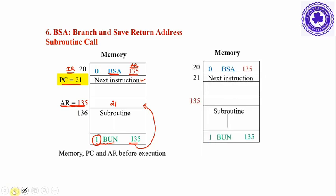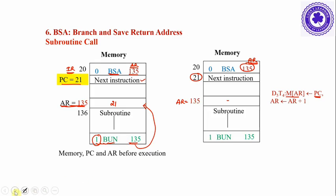When the BSA instruction is executed, the return address in the PC is stored into memory at the address part of the instruction. That address part is stored in AR, which now holds 135. So the return address 21 is stored into the 135th memory location.